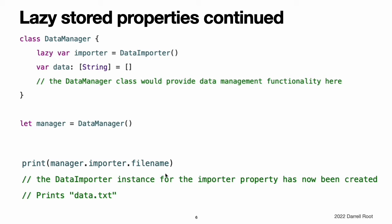Note: if a property marked with the lazy modifier is accessed by multiple threads simultaneously and the property has not yet been initialized, there is no guarantee that the property will be initialized only once.